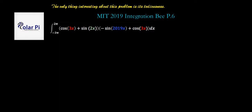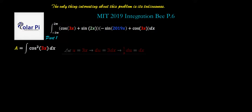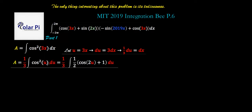Part one is about integral A. We first make a u-substitution for 3x, so u = 3x, meaning du = 3 dx, from which we gather that (1/3) du = dx. So the dx becomes (1/3) du and 3x turns into u, meaning integral A will first look like this: (1/3) times the integral of cos²(u) du.